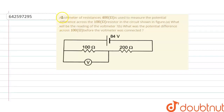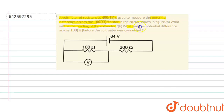The question says: a voltmeter of resistance 400 ohm is used to measure the potential difference across the 100 ohm resistor in the circuit shown in the figure. Part A: what will be the reading of the voltmeter, and what was the potential difference across 100 ohm before the voltmeter was connected?